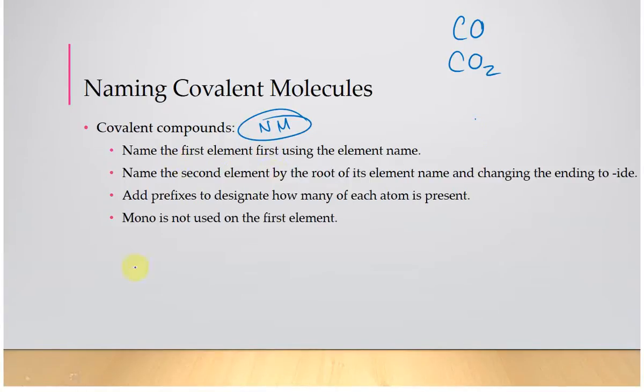So we're going to name the first element by its element name. We're going to name the second element by the root of its element name, and we're going to change the end of the name to -ide. We're going to add prefixes to indicate how many of each atom there is, except we're not going to use mono if it's on the first element. That would just be superfluous. So if you look at this, this is carbon, this is oxygen, so it's going to be oxide. So carbon and oxide. Now we have to come back and add prefixes. We don't use mono on the first element. There's one oxygen, so it's monoxide. Carbon monoxide.